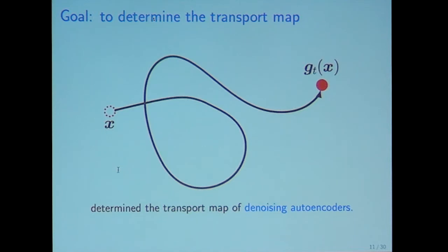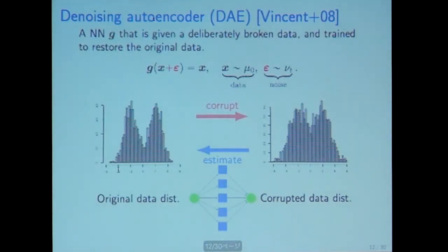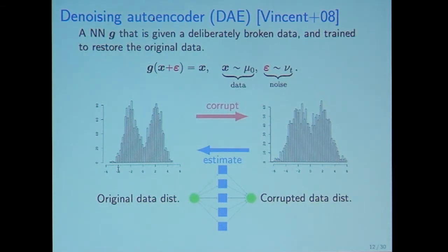And today's talk is that we determine the transport map of denoising autoencoders. Now, I explain the denoising autoencoder.